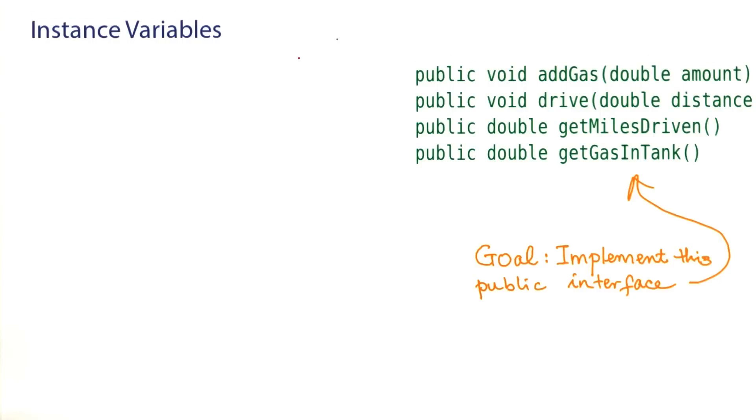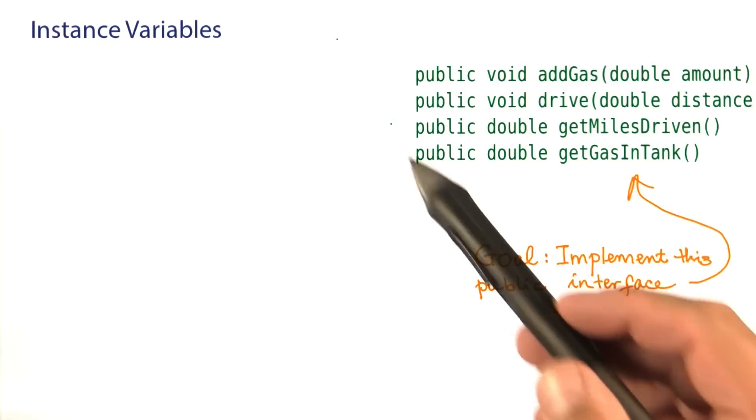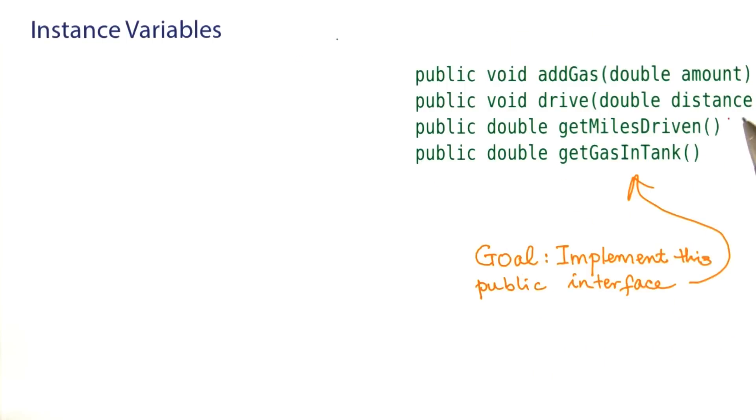You've just practiced with Sarah how to find the public interface of another class. Now let's go back to our car class. We had discovered the public interface that you see over here. And now our goal is to implement it.